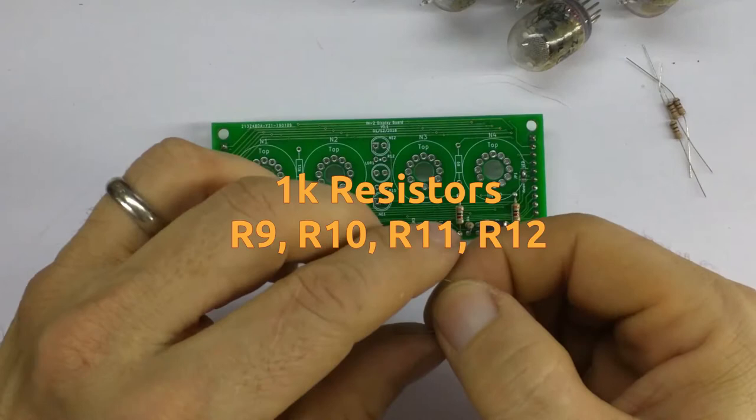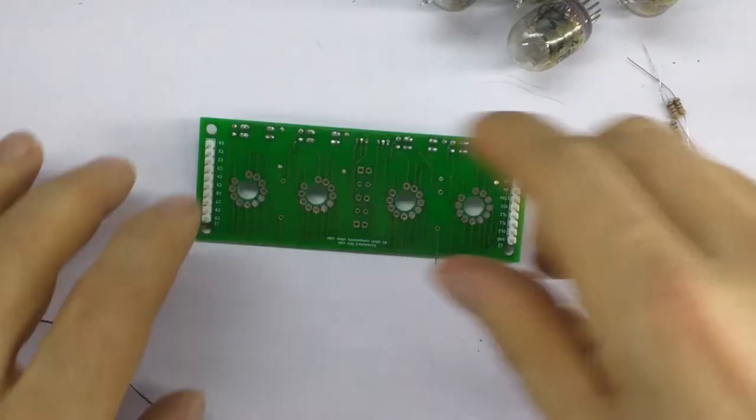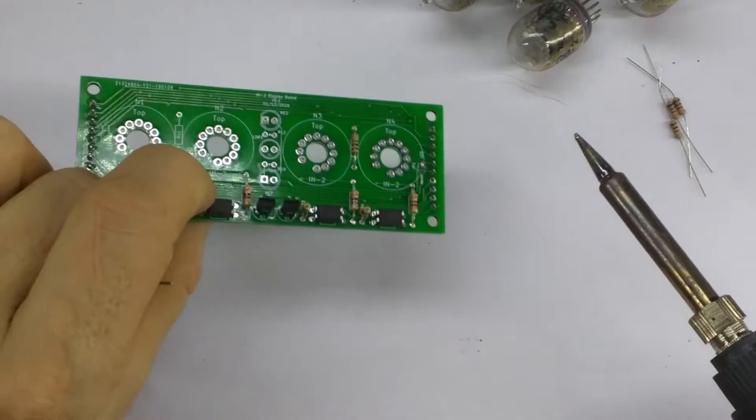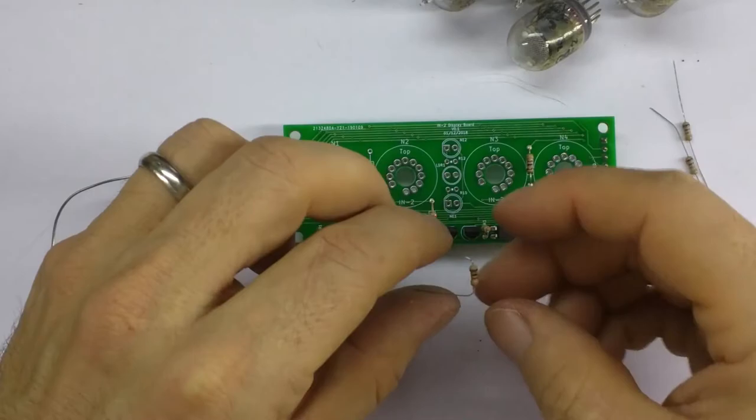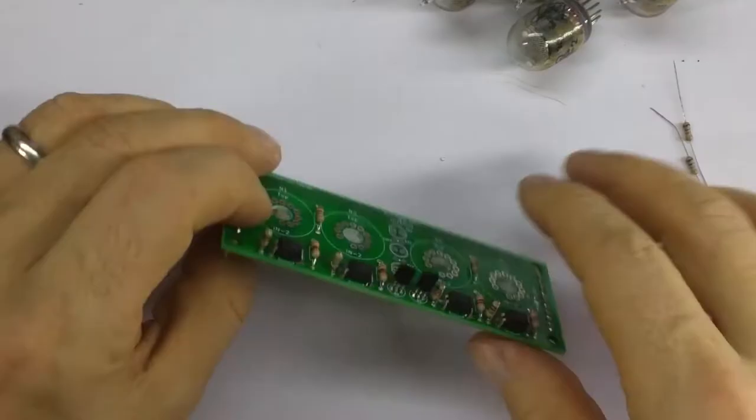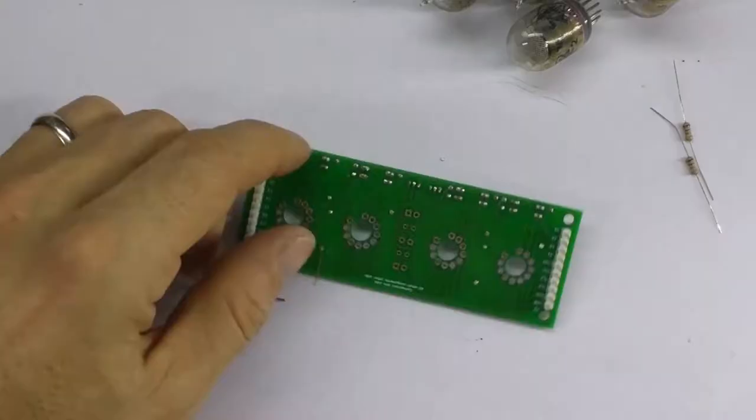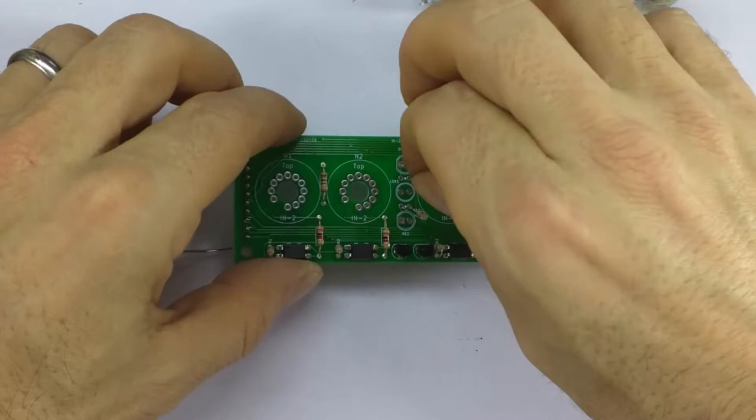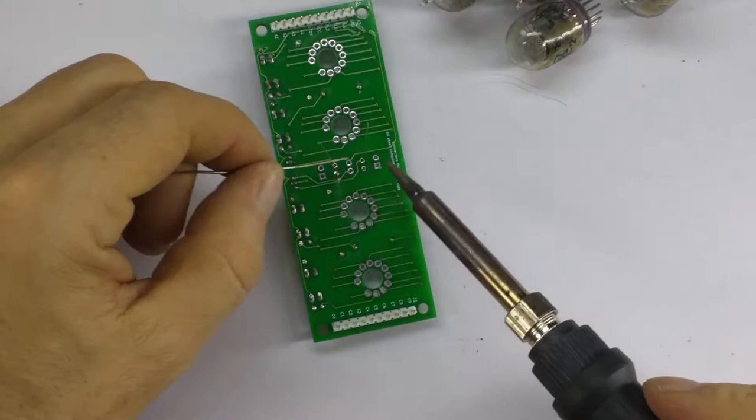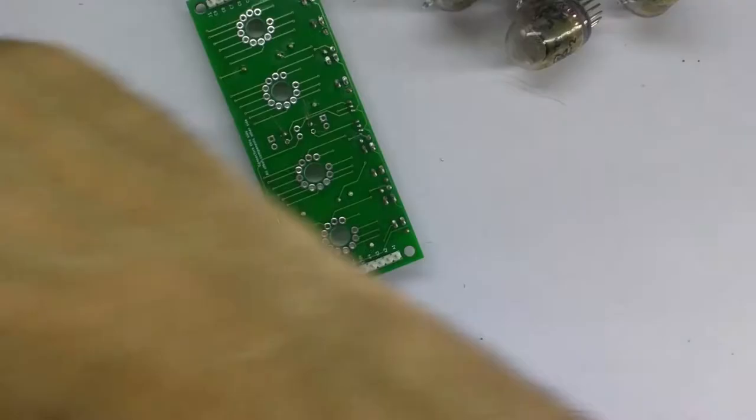So we're going to put in R9. And again, just bend down the leads. Slot it in. It should go in nicely. Straighten out the leads on the other side. Spread them out so it doesn't fall out.